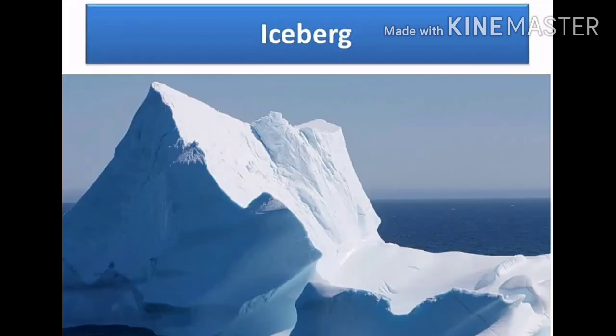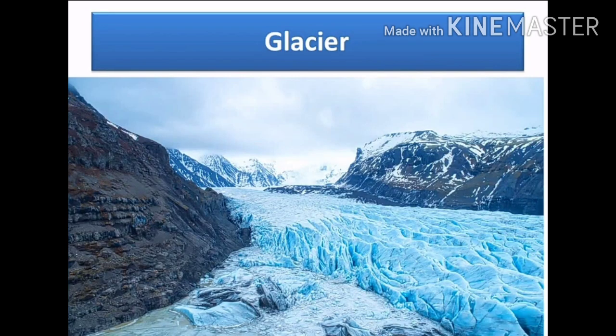Children, what you see in the picture is an iceberg. It is a huge piece of ice that breaks off a glacier and floats around the ocean. Most of the iceberg is under the water and we can't see it. Scientists estimate the time for an iceberg, from the first snowfall in the glaciers to the final melting in the ocean, will be as long as around 3,000 years.